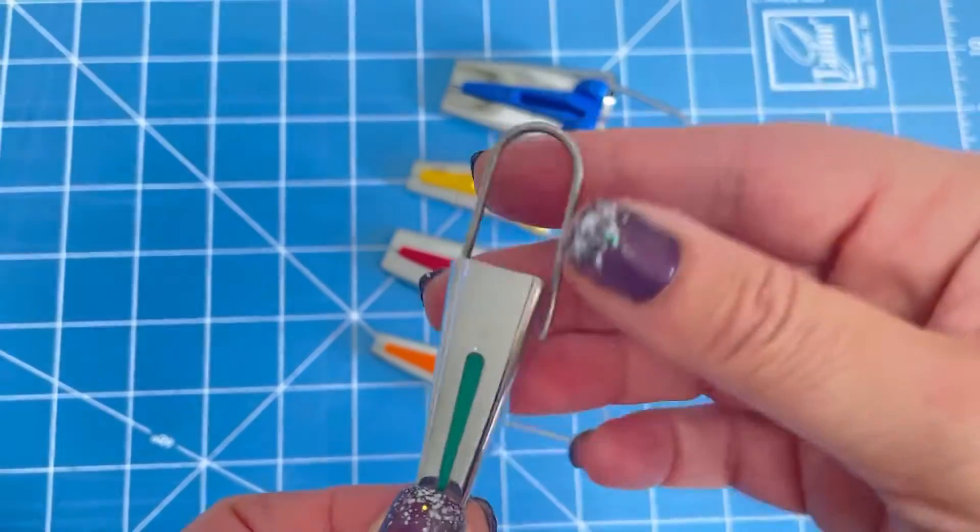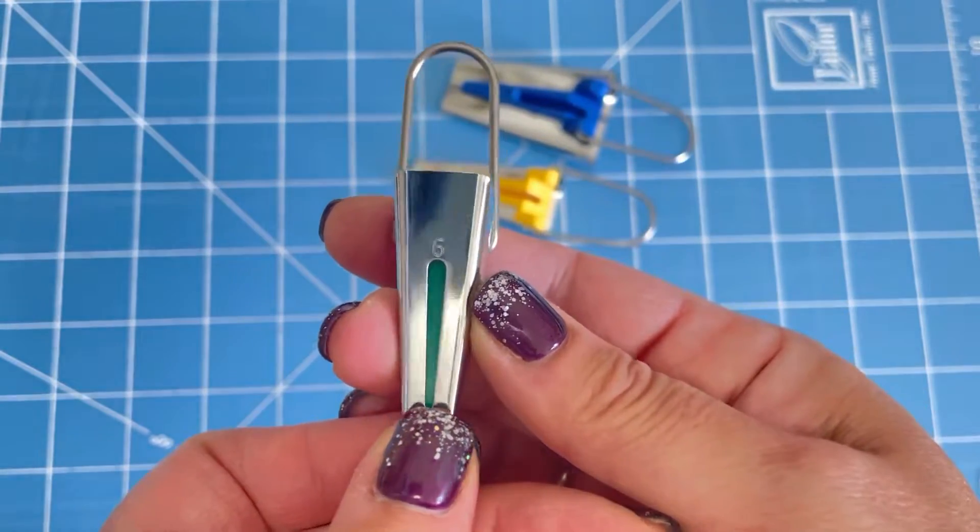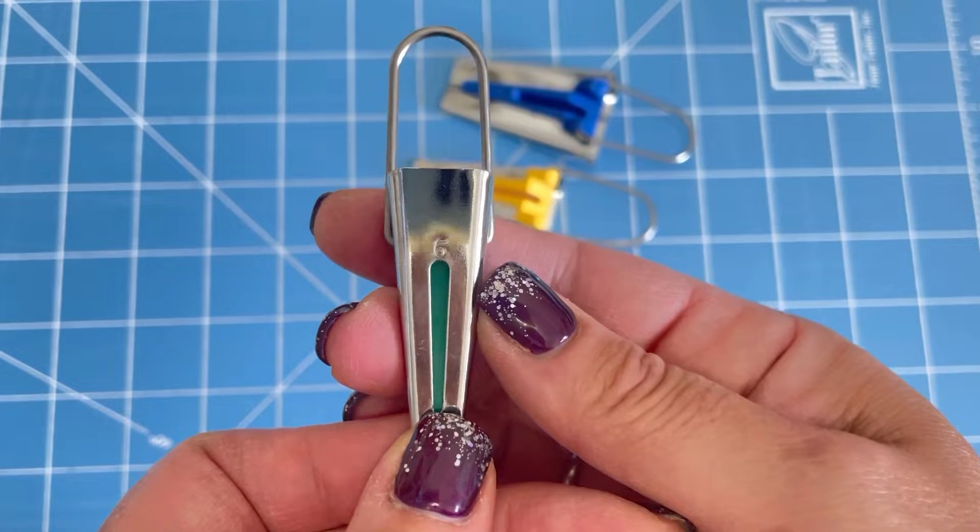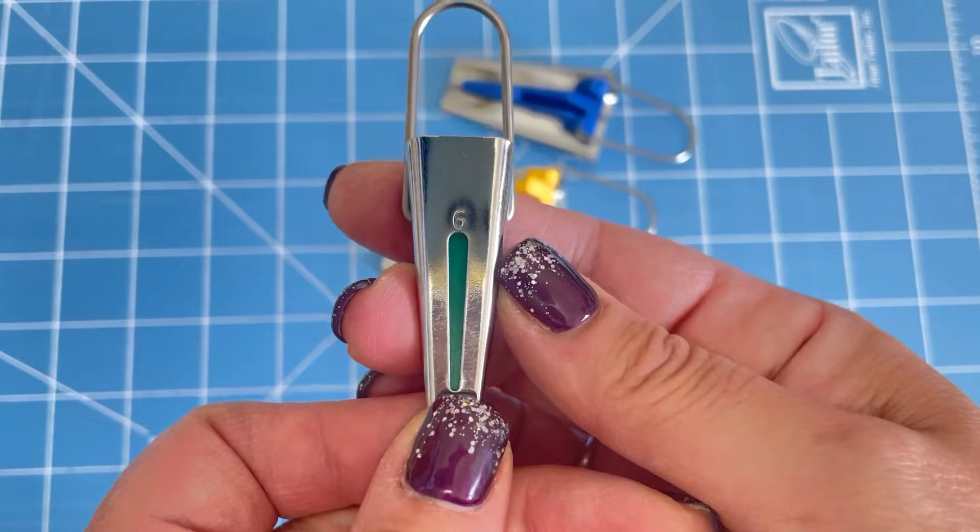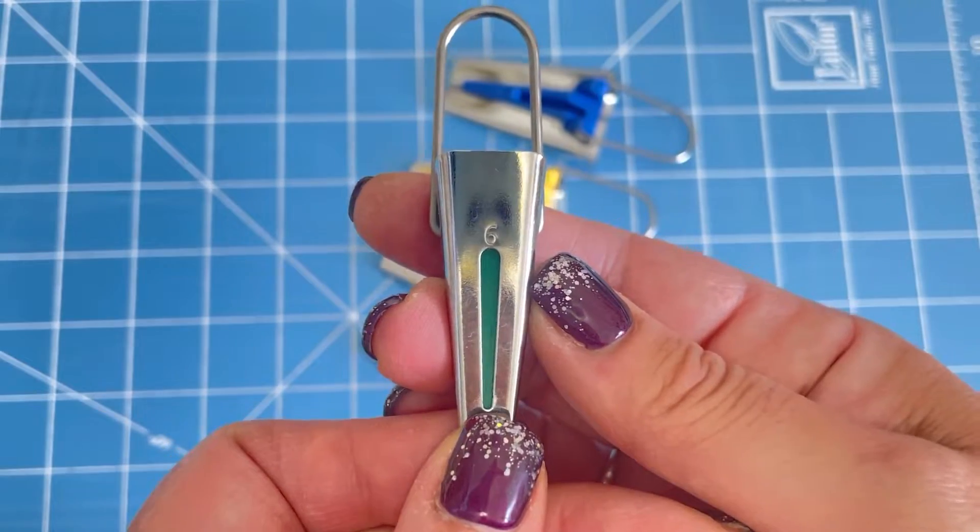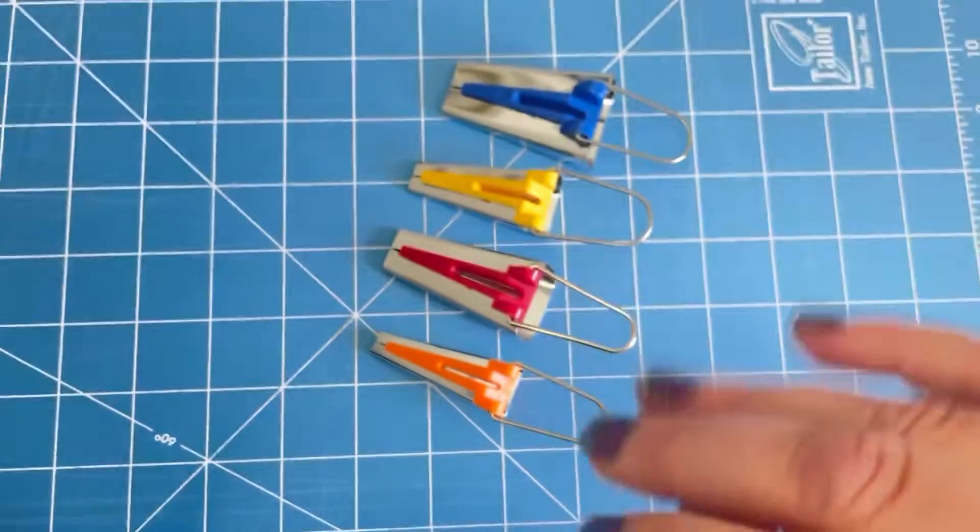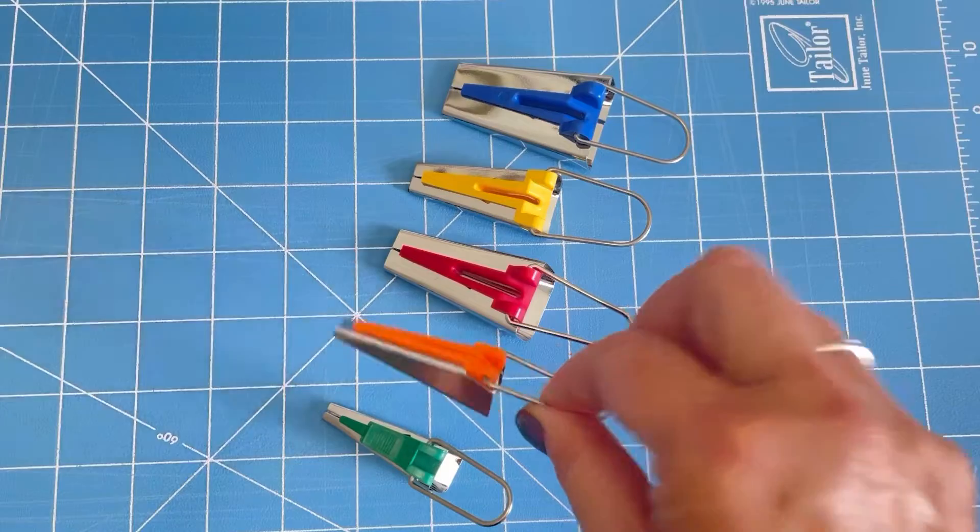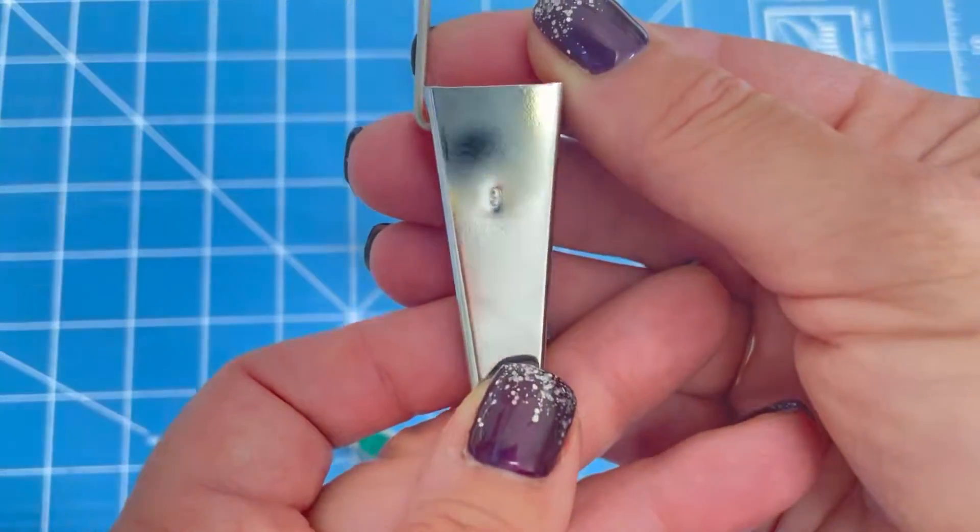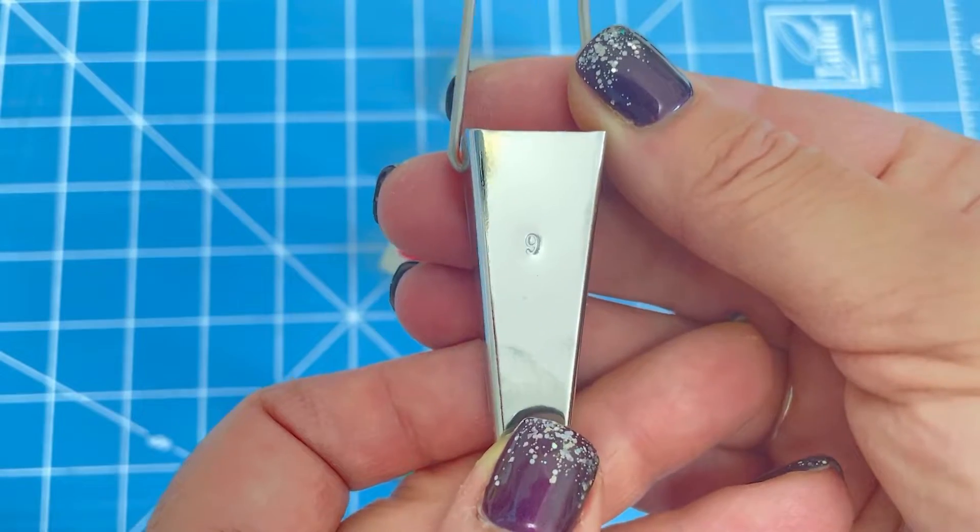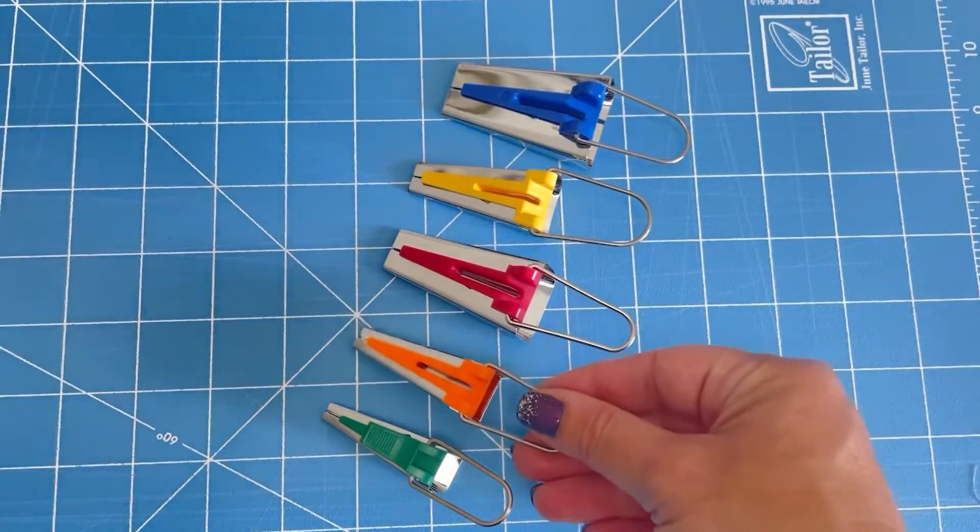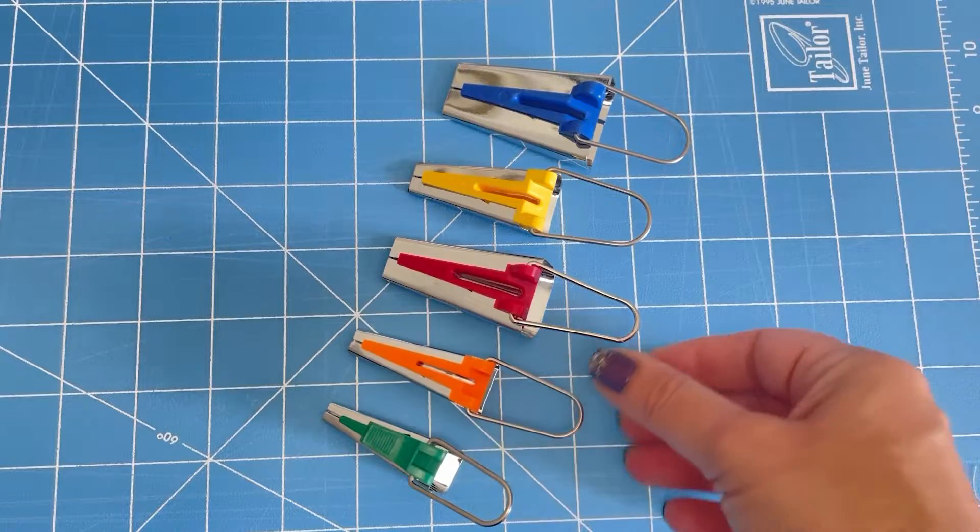So this makes 12 millimetres. Sorry, this makes six millimetre bias binding. So you would actually cut the width of fabric that you put through it at 12. This one is nine. So you would cut 18 millimetres width of fabric to pop through there.